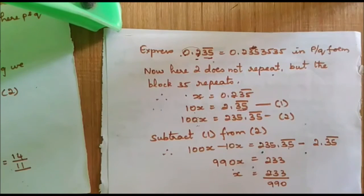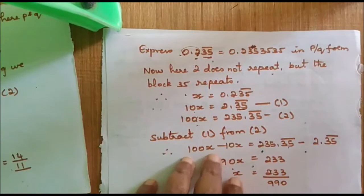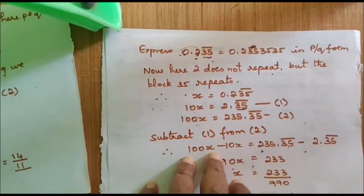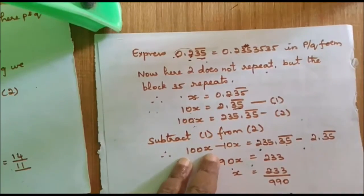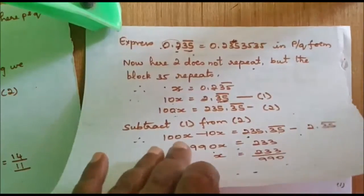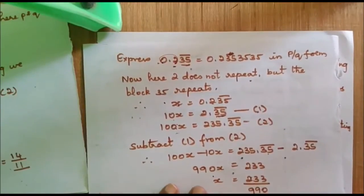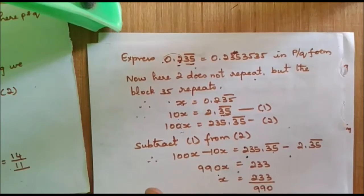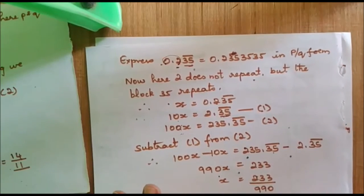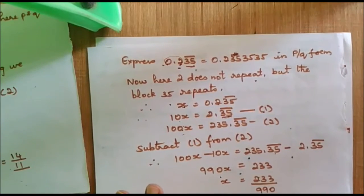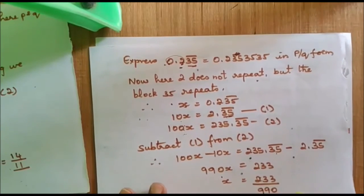I hope you understood this well. This is how we solve problems where we are asked to write it in the form P by Q, where P and Q are integers and Q is not equal to 0.